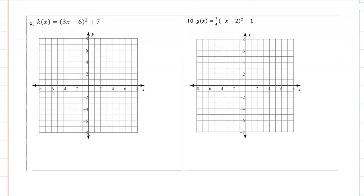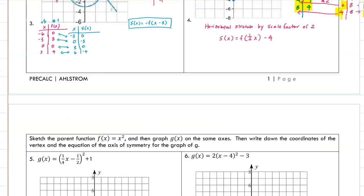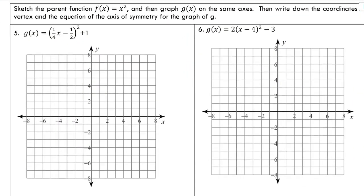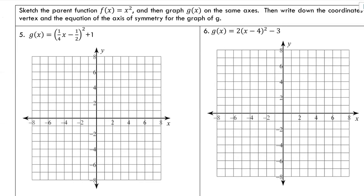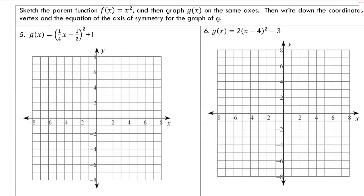Next section: sketch the parent function, then graph g(x) on the same axis, and write the coordinates of the vertex and equation of the axis of symmetry. We need to factor out one fourth. When I factor that out I'm effectively multiplying x-values by 4 and I get g(x) = (1/4)(x-2)² + 1.